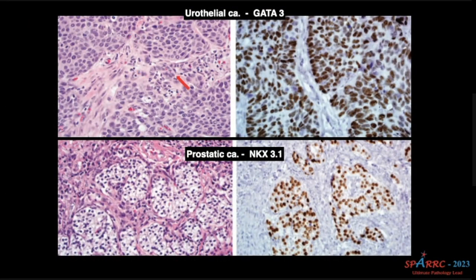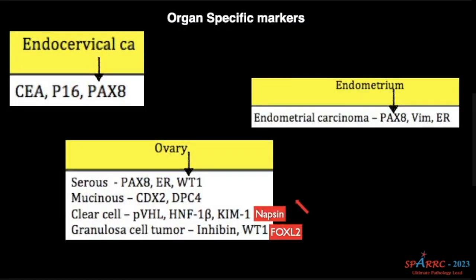So this is urothelial carcinoma, GATA-3 positive. Prostatic carcinoma, NKX-3.1 positive. Please remember PSA and PAP — they are all gone. NKX-3.1 is the new marker for the prostate.